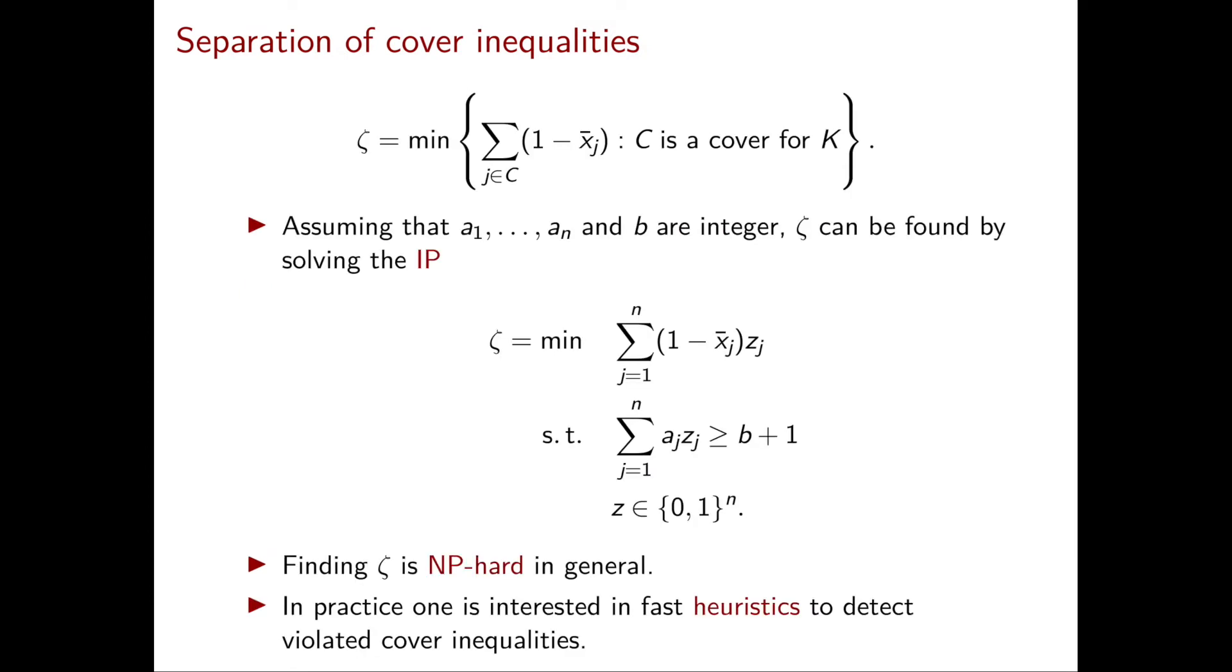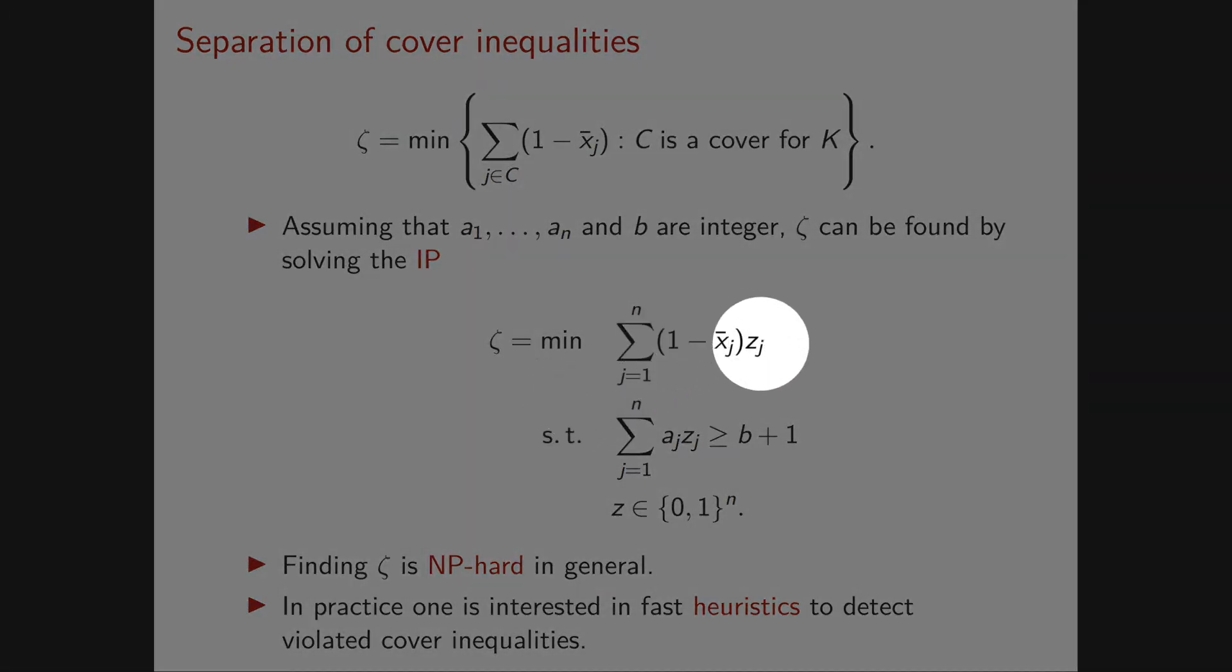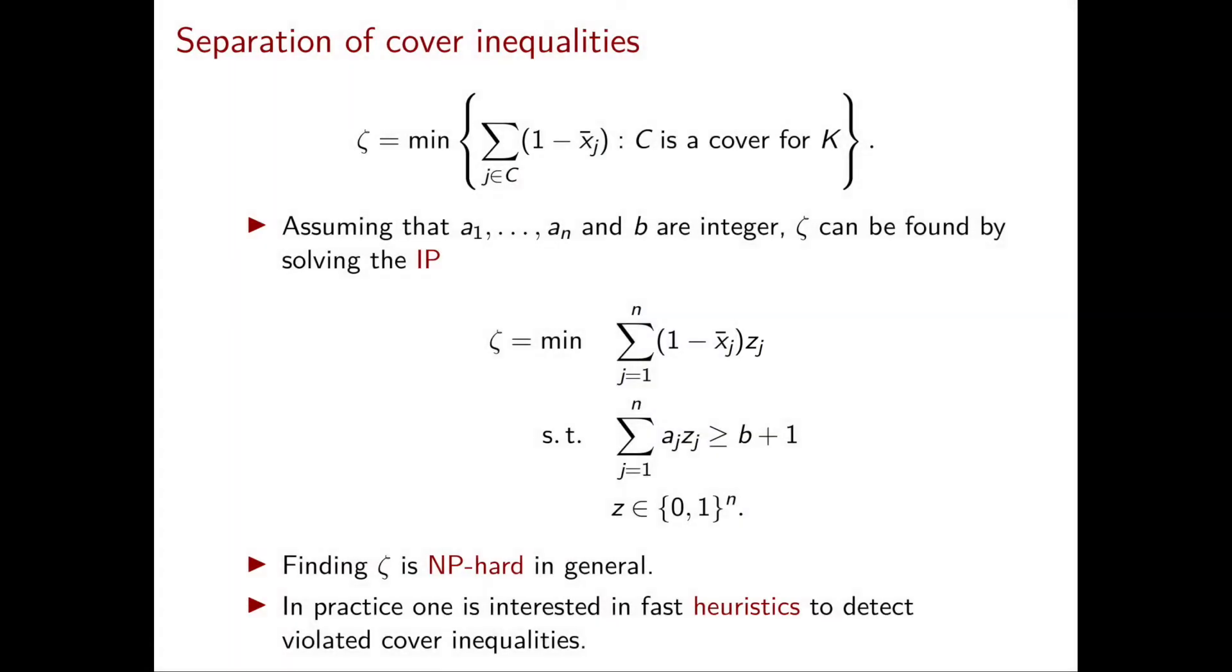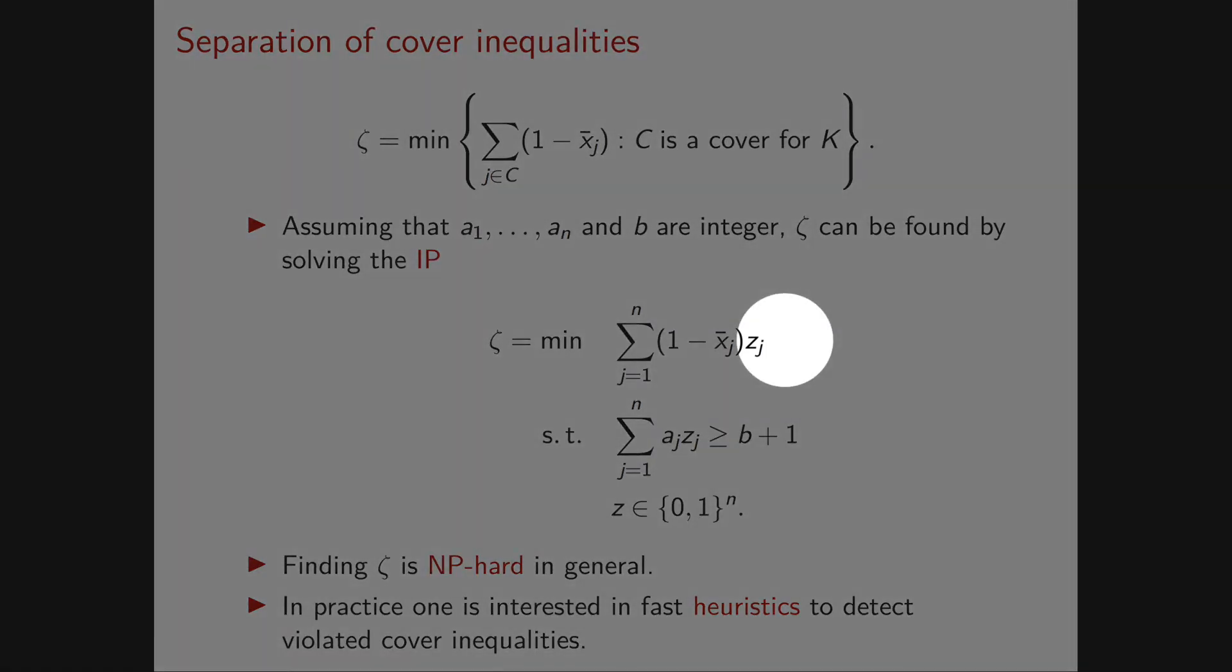Now, let's see how we can formulate this optimization problem that determines ζ as an integer programming problem. We need to introduce variable zⱼ. The idea is that zⱼ will be equal to 1 if and only if the item j is in the cover.